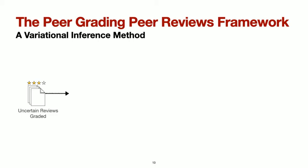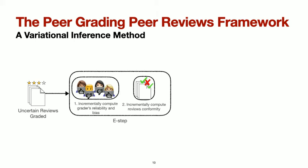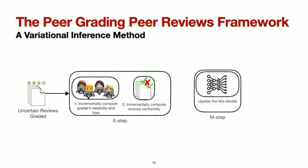In this algorithm, we iterate between two steps. The E step, where we incrementally compute grader's reliability and bias, and then incrementally compute the review's conformity. And the M step, where we train the MixModel using the updated conformity scores of the uncertain reviews. We iterate between these two steps until convergence. At the end, we obtain our reviews with a conformity score.